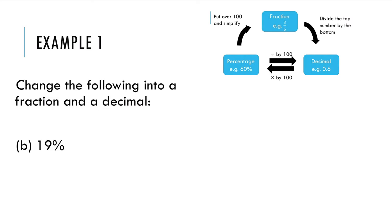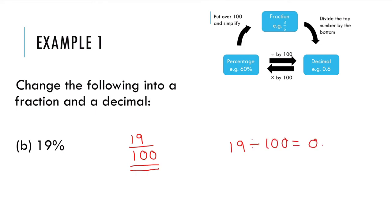Example 2: change the following into a fraction and a decimal. Firstly, 19 over 100. You can use your calculator to check — if you have a CASIO calculator, you can use your fraction button and it will simplify your fraction for you. But if you know that 19 is a prime number, that means no other numbers other than 1 and 19 can go into it. So we can't simplify this down at all — that is it as a fraction in its simplest form. Then if I want to go from a percentage to a decimal, I divide by 100 to get 0.19. Remember, we can do this without a calculator by moving the decimal point back two places.